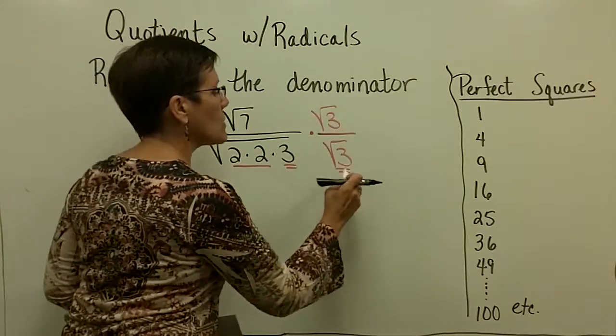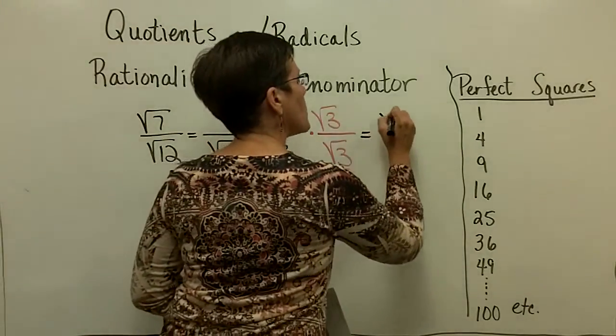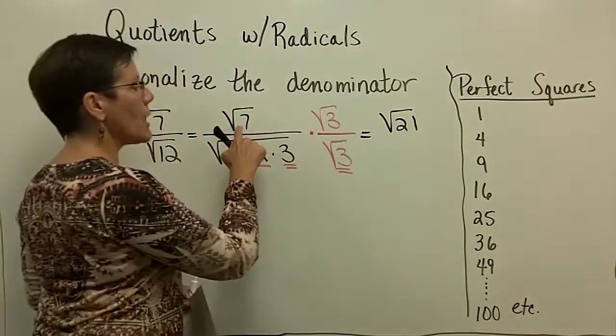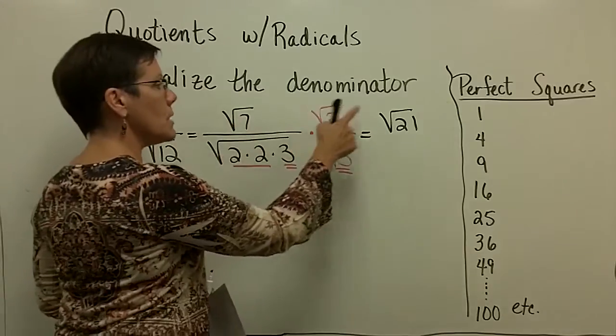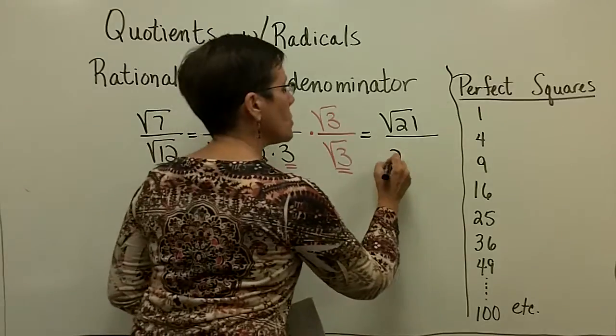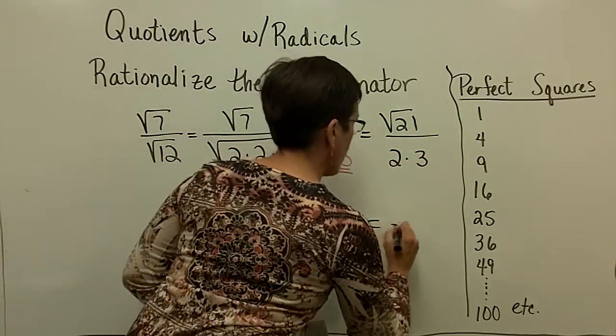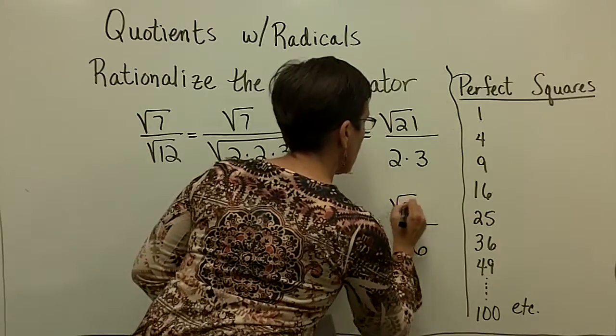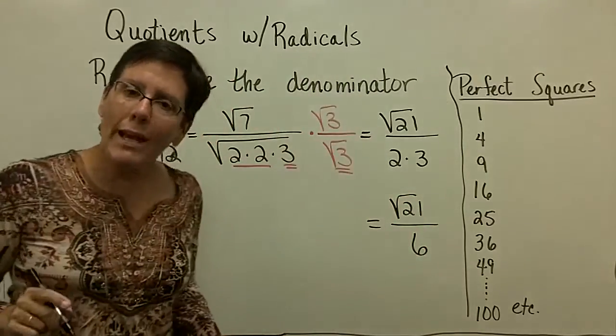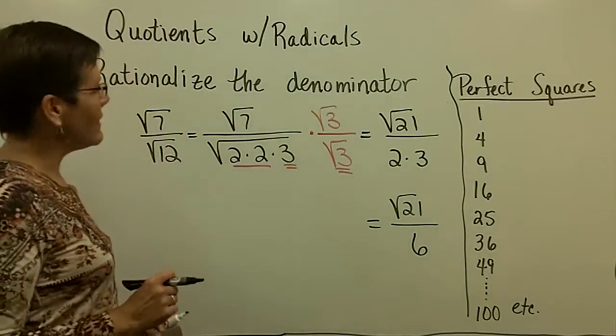So that this square root of three and that square root of three give me three. Upstairs, I will have the square root of 21 by the product rule for radicals. You can just multiply seven times three and get that 21. And downstairs, the square root of two times the square root of two is two. The square root of three times the square root of three is three. And therefore, I have a six in the denominator, and I don't have a radical in my basement anymore. It's what's called rationalizing the denominator.